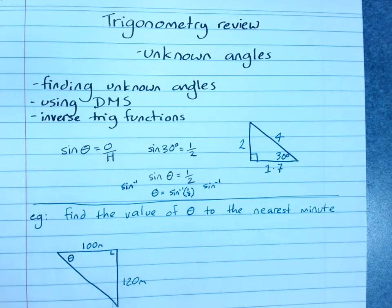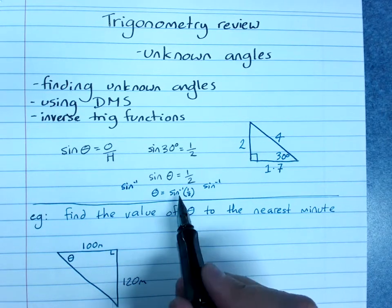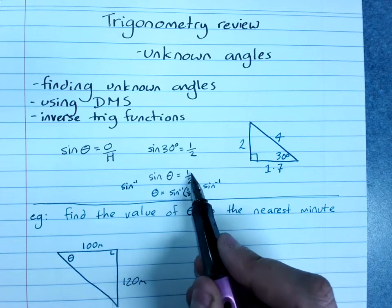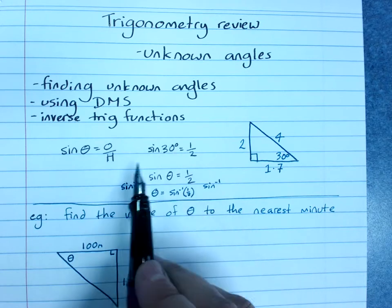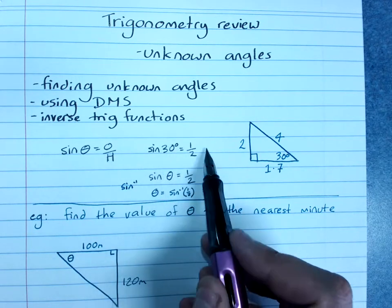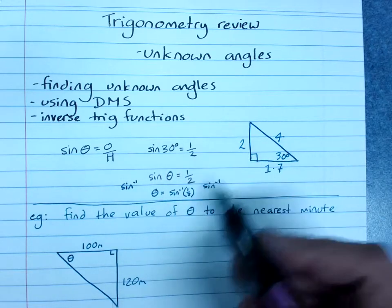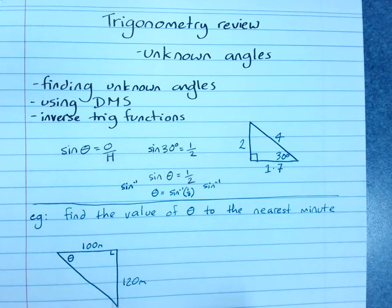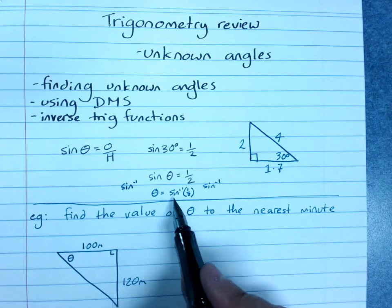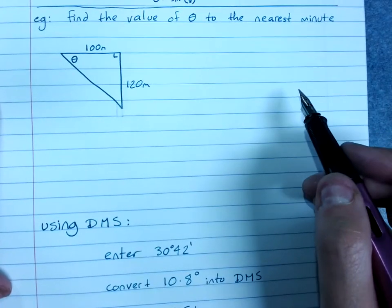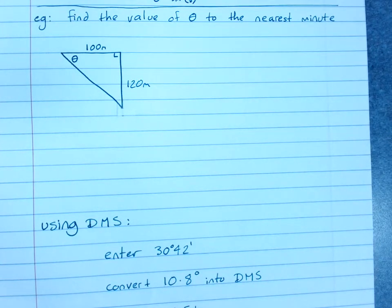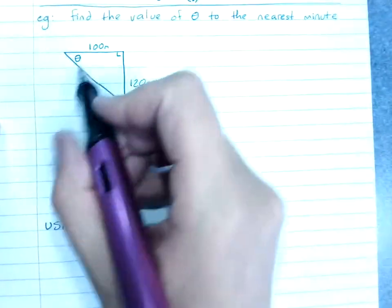So all we're doing when I use the inverse key is I'm saying hey, I know the ratio, what's the angle? When I say sine of 30 degrees, I'm saying hey, I know the angle, what's the ratio? They work together. If I know the angle and a side, I can find the other side. If I know two sides, I can find the angle. This is why we always use inverse sine when I'm finding an angle.